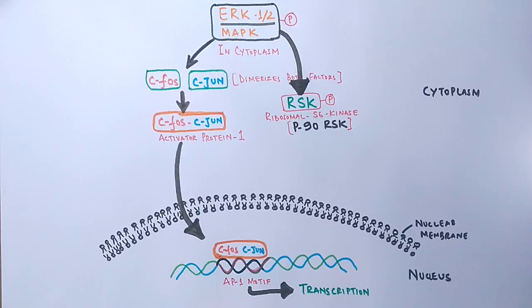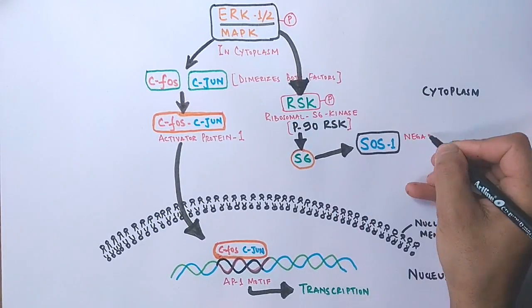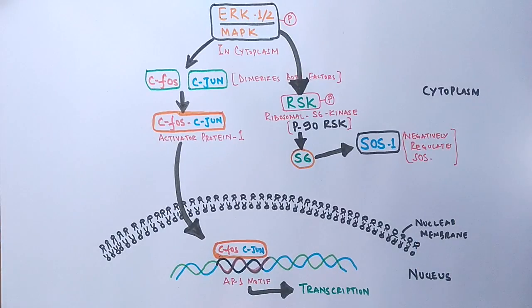The MAPK activates the p90 form of RSK. Just remember, it is the p90 form of RSK which includes S6 protein. The activated S6 molecule has two different functions.